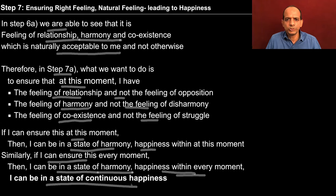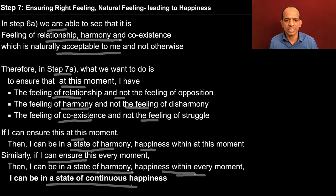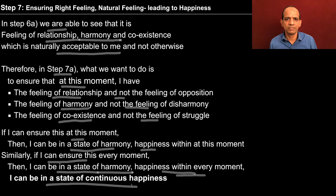If I can ensure this at this moment, I can be in a state of harmony and happiness within at this moment. Similarly, if I can ensure this every moment, I can be in a state of harmony and happiness within every moment, and I can be in the state of continuous happiness, which is our committed state and our basic aspiration. To ensure continuity of happiness I need to go through this. I need to contemplate on the feeling, see which feelings are naturally acceptable to me, then contemplate on the right feeling, understand the harmony of all the orders in nature, and finally realize the submergence of entire nature in space.